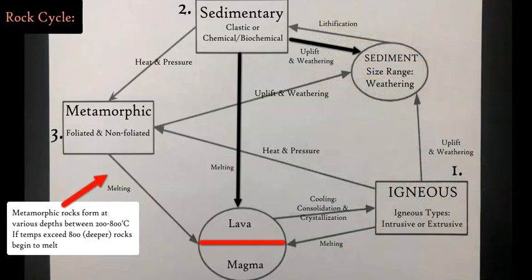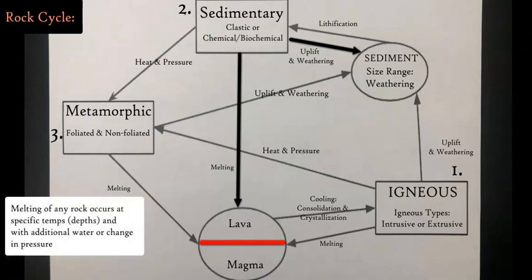Any arrow that's going towards metamorphic rock will be the process of metamorphism. From igneous, if you bury it deeper down, you get metamorphism which causes a metamorphic rock to be created.